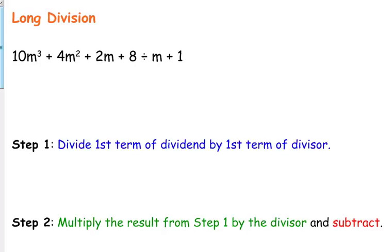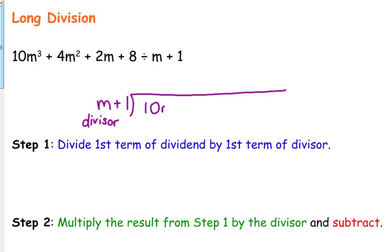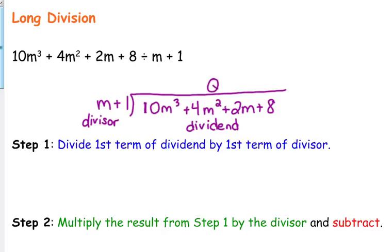Just to make sure that we know what our terms are called, let's set this up like we would a long division problem from way back when we had to do division by hand. You put your divisor outside of the house — that's your divisor. The polynomial that goes inside the house is your dividend. And then your answer is called the quotient. Divisor, dividend, quotient.